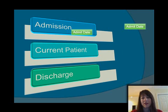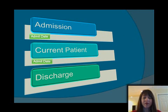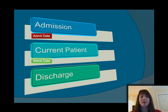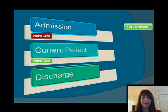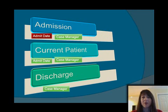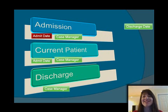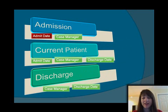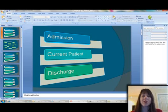First we have Admit Date — we need it during Admission and we also still need it when the person is a Current Patient. Within each content type we can determine whether it's required: it's a required field at Admission, but just optional when they're a Current Patient. The next field is Case Manager — that field exists as optional in each different content type. Then Discharge Date goes under Current Patient and also under Discharge, and that field is required when the patient is a Discharge. Each field gets organized and it's determined whether it needs to exist in each content type and whether it's required.